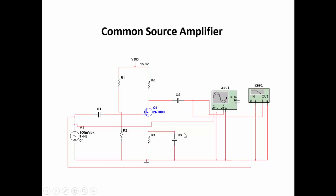CS is the source bypass capacitor to improve the gain of the circuit. C1 and C2 are the coupling capacitors on the input and output side, used for blocking the DC component and allowing the AC component. The source bypass capacitor bypasses the AC signal to ground. A small signal input of 100 millivolts is applied and the amplified output is observed at the drain terminal after coupling capacitor C2.